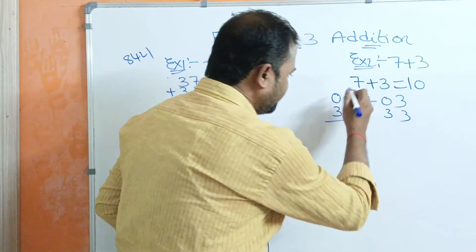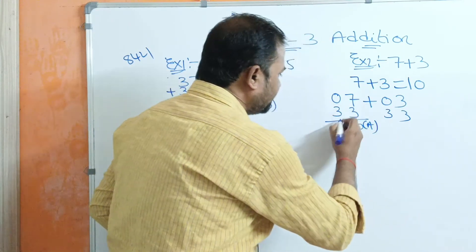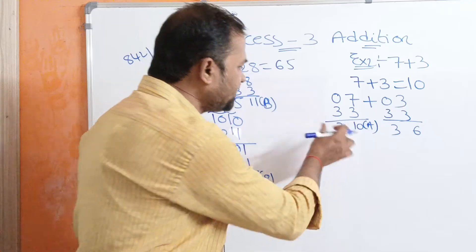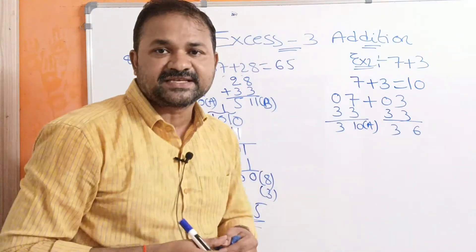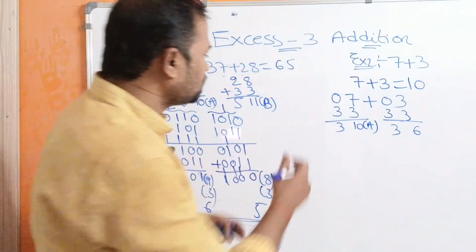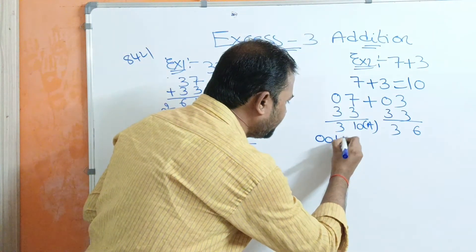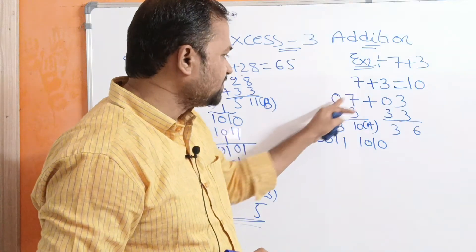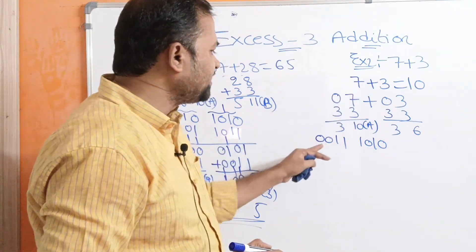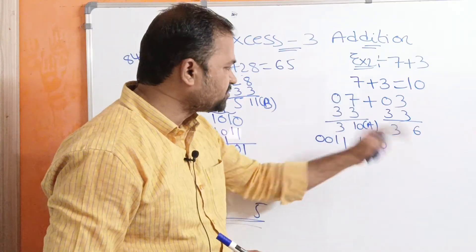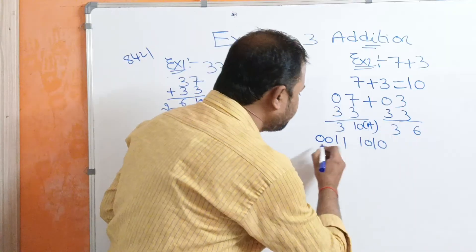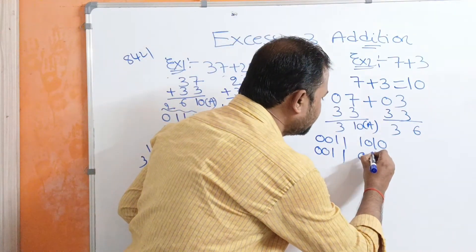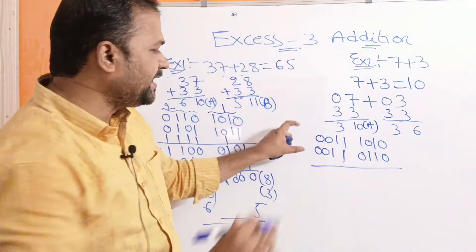Now let us represent the XS3 numbers in binary notation. First number 07 in XS3 is 3 and 10: 3 in binary is 0011, 10 in binary is 1010, so the first number is 0011 1010. Second number 03 in XS3 is 3 and 6: 3 is 0011, 6 is 0110, so the second number is 0011 0110.